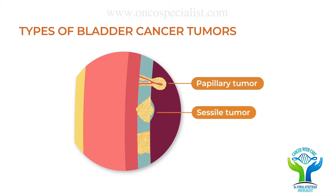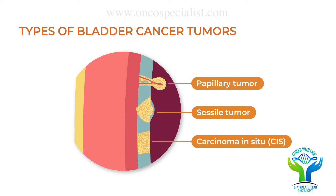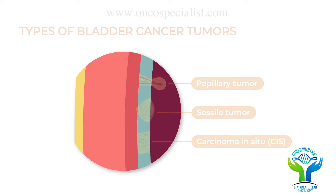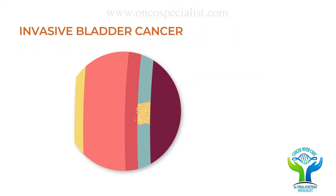The tumour located in the green line is called a non-invasive tumour, which can be treated by many non-surgical treatments. Whereas when the tumour invades the muscle layer, shown in red, it is called a muscle-invasive tumour.